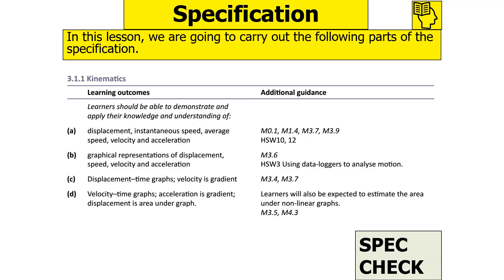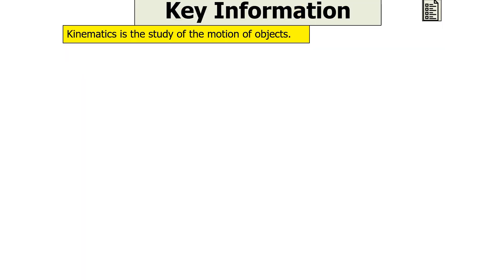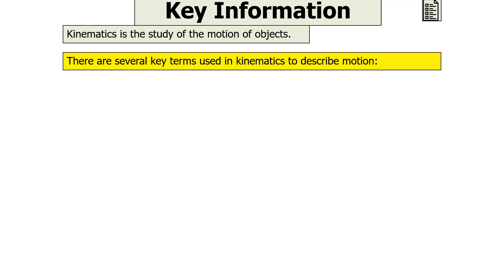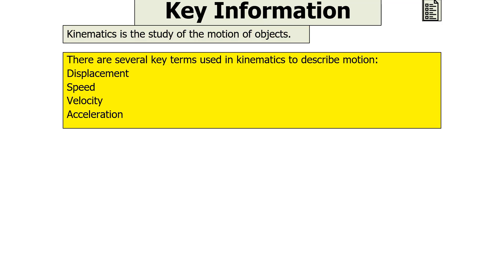We're looking at the following part of the OCR A-level physics specification: 3.1.1 kinematics — in particular, displacement, instantaneous speed, average speed, velocity and acceleration. Kinematics is the study of motion of objects, and there are several key terms used in kinematics to describe motion: displacement, speed, velocity and acceleration.